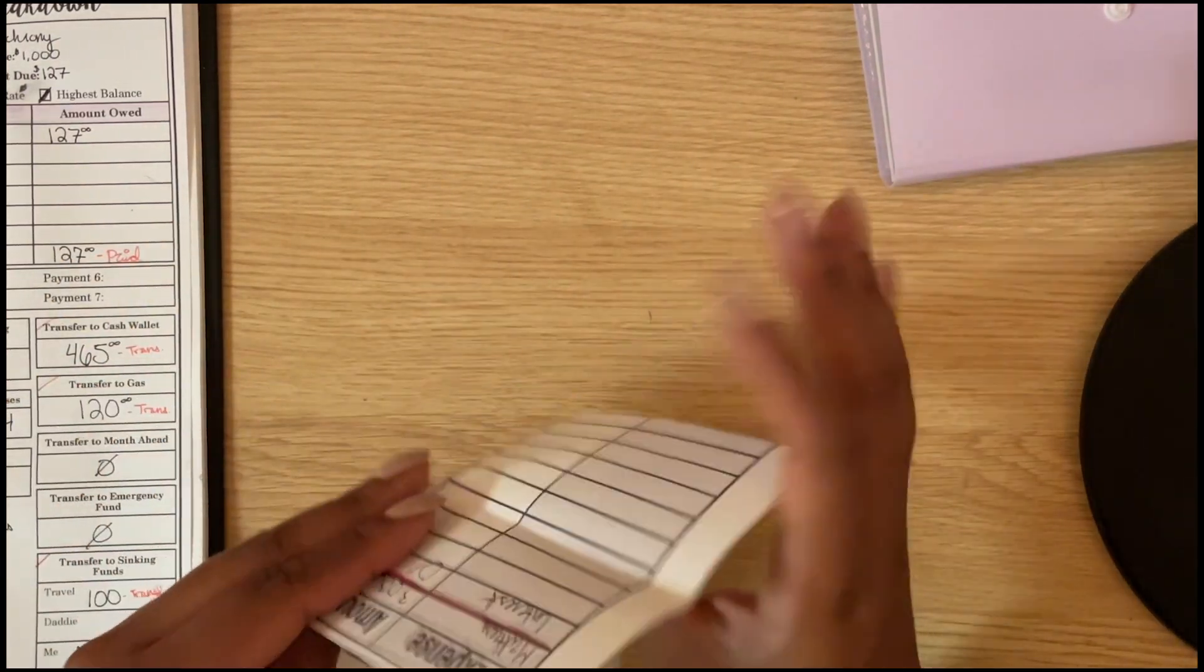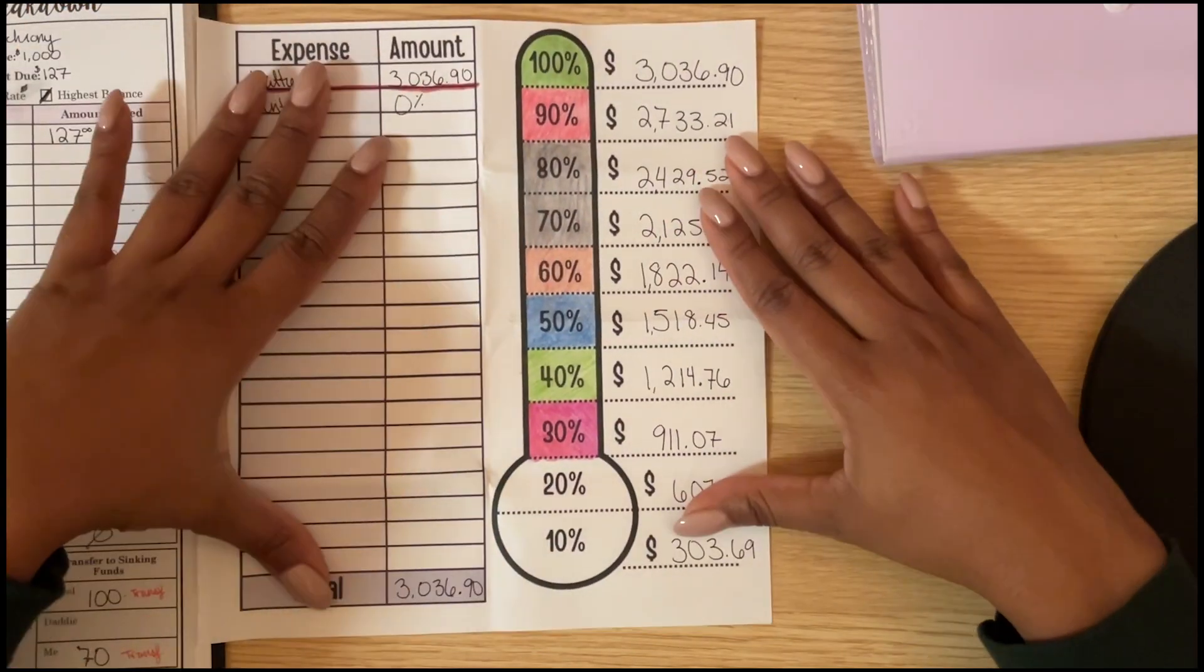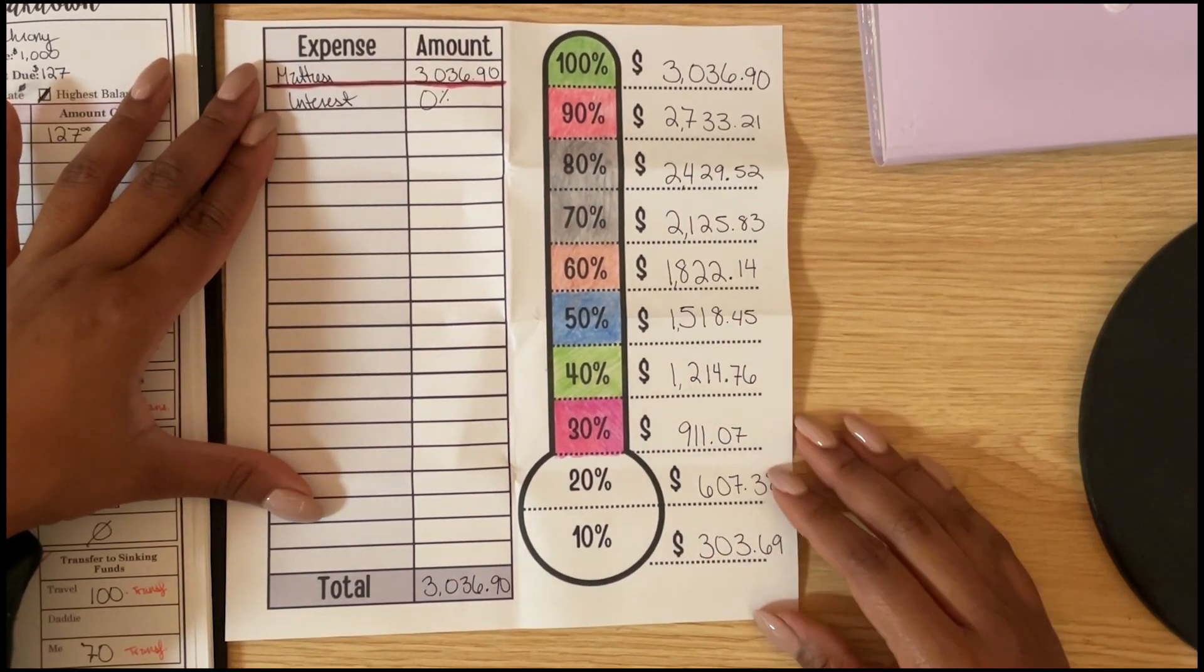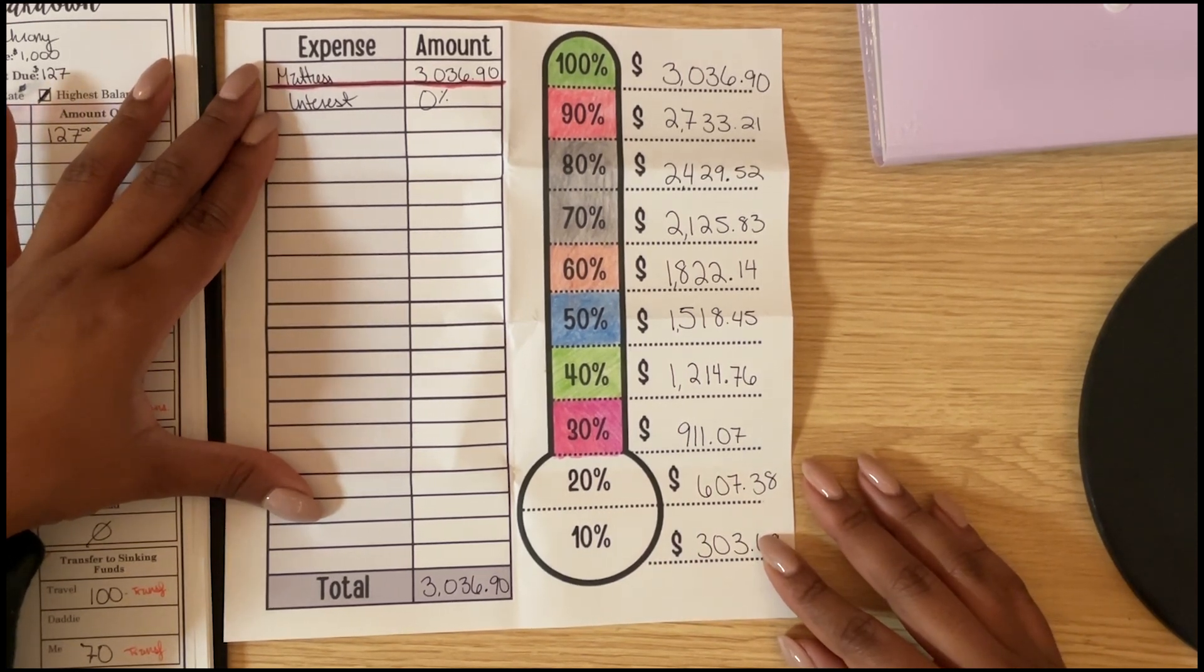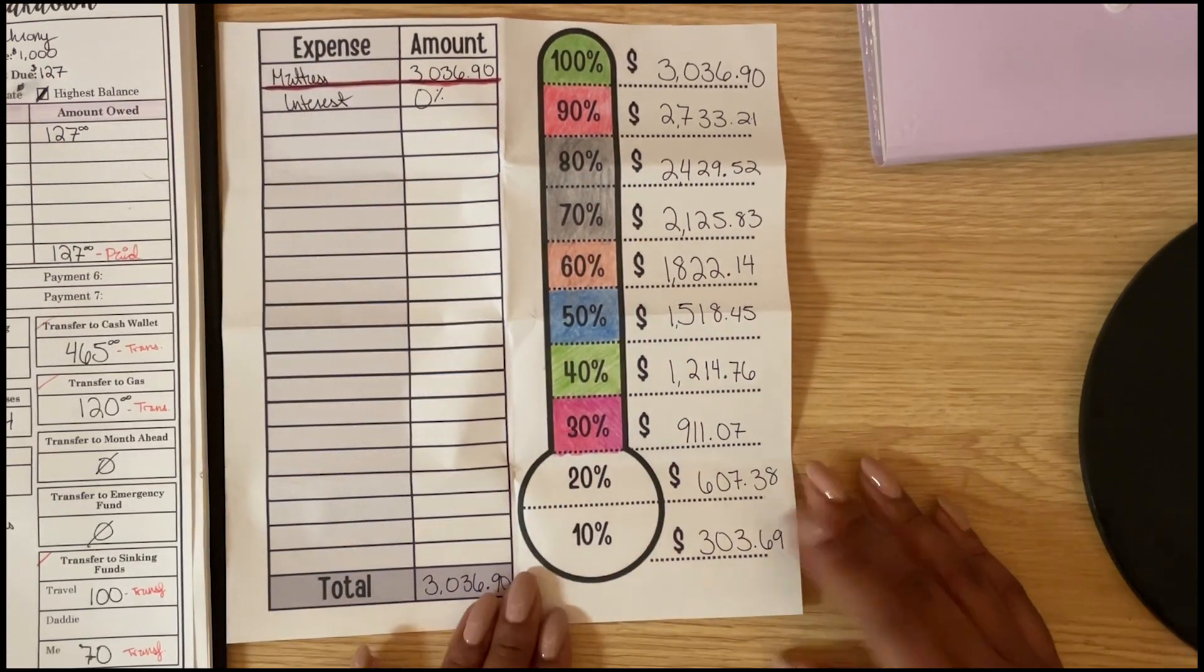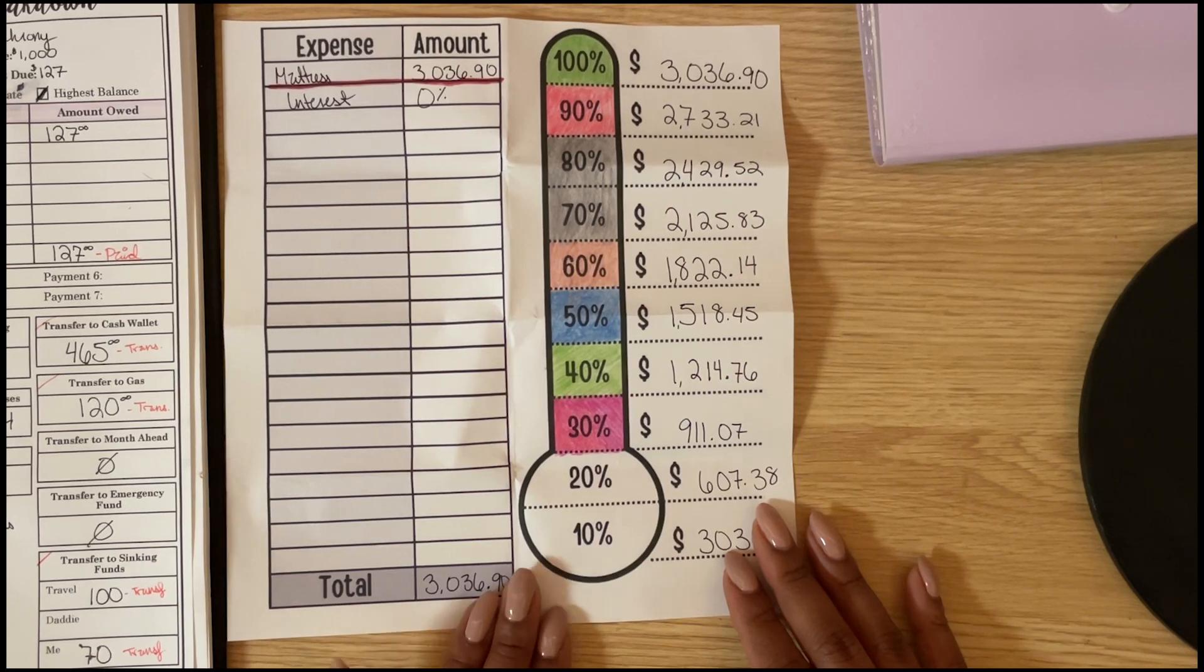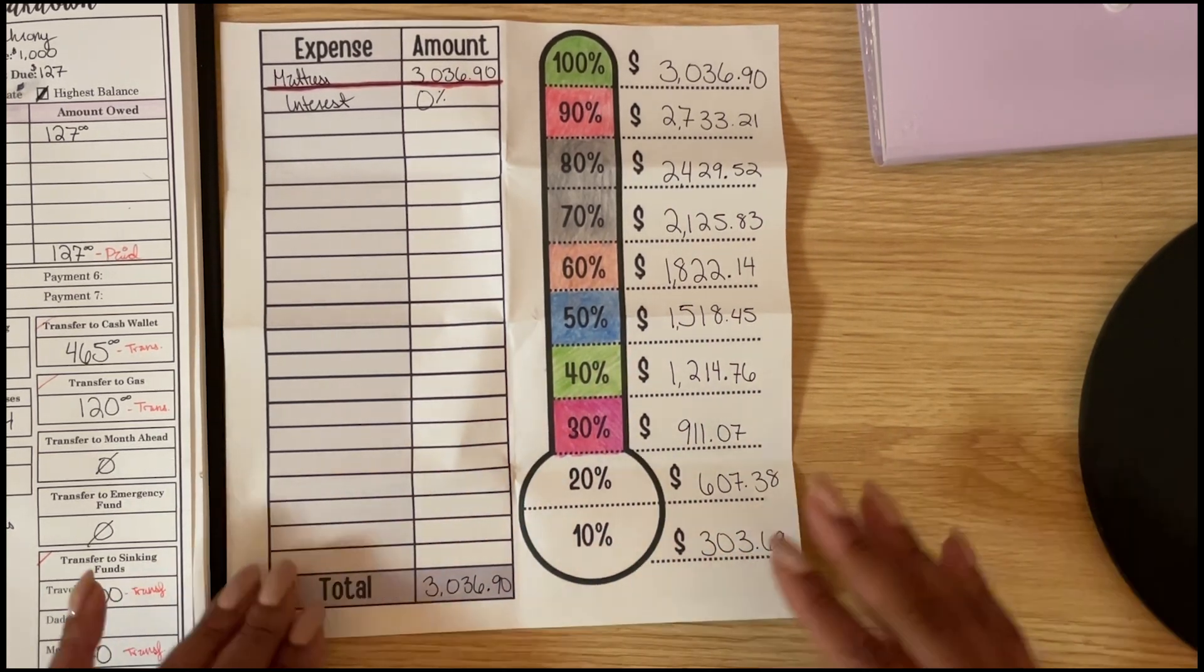On my mattress debt we are so close to finishing. So I was able to color in the 30%, so now we've just got the 20% and the 10%. I am on track to have this paid off by June 2025, which is great because again it is 0% interest until March 2026, so we will be all good. And then once I pay this off, the minimum monthly payment of $127 will get added to my student loan payment every month, so I'll just be increasing how much money I am paying for my student loan.